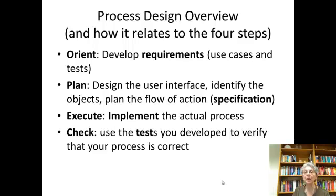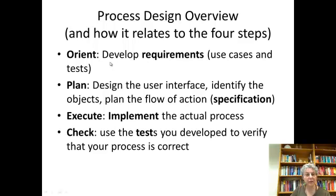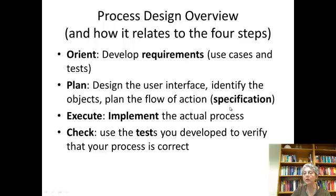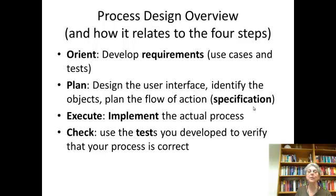The overview of how we do process design in the context of our general problem solving framework is: we start with orientation, the orient phase, which is developing requirements — this will involve use cases and tests. Then once we have our requirements, we plan how to do it, which means designing the user interface, identifying the objects, and planning the flow of action. This phase is typically called the specification.